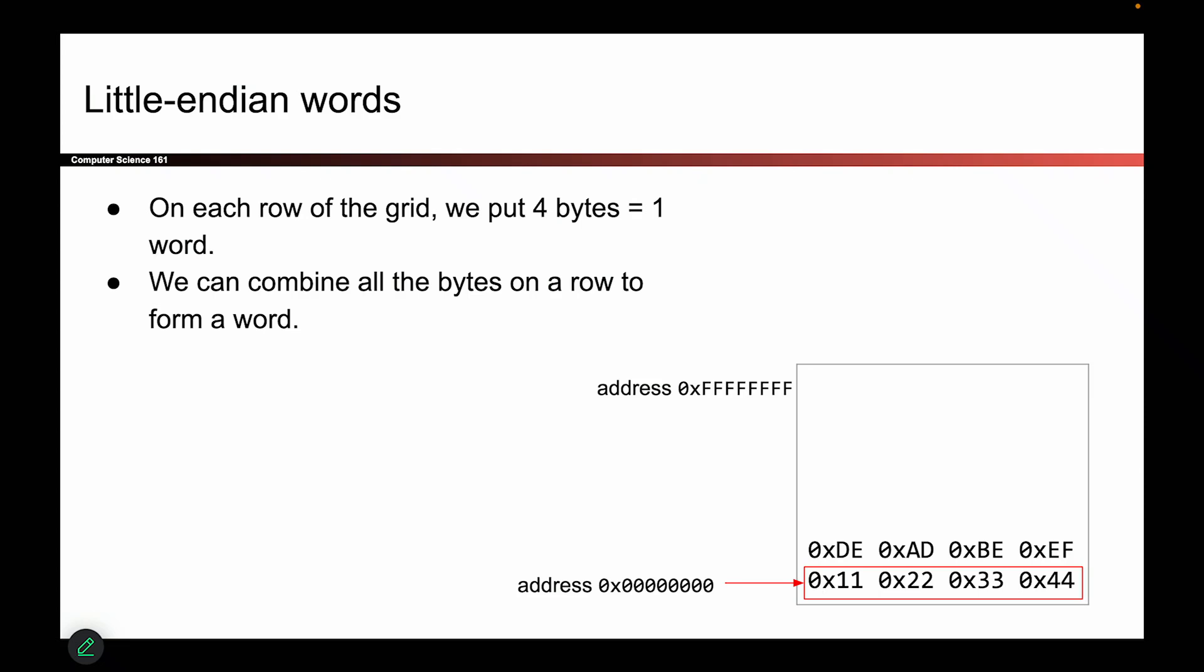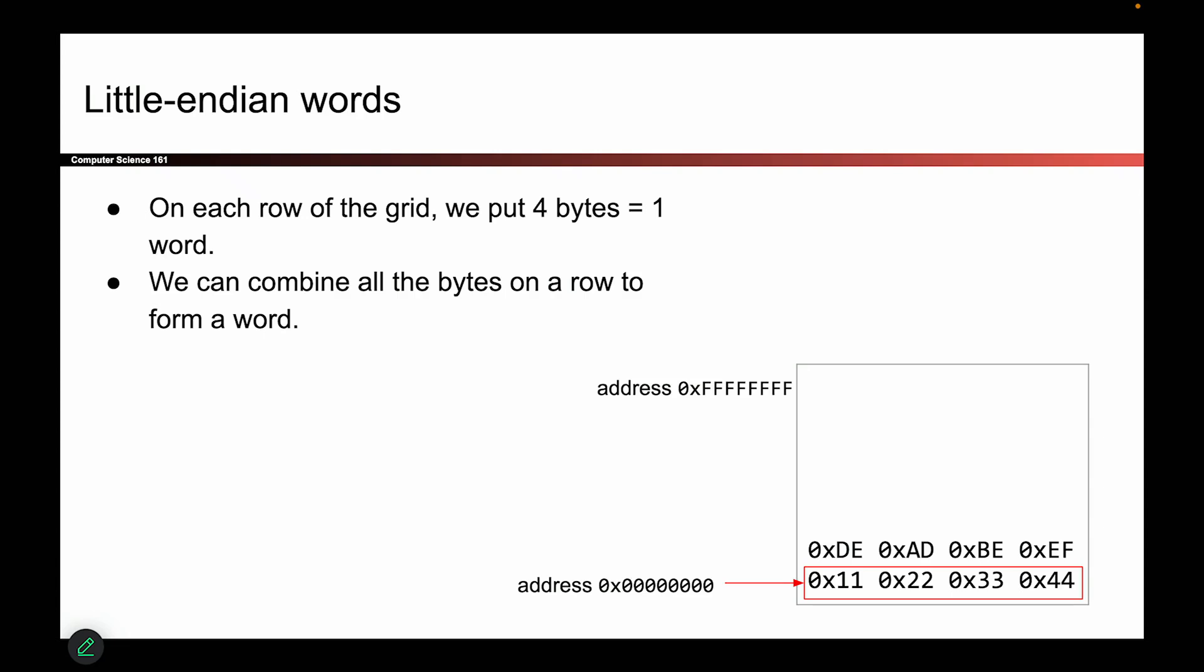And this introduces a question that we have to answer, which is, if I want to read these four bytes as a single unit of data, I don't want to read the bytes separately. I want to read them together, because I want to combine them and read them as something interesting, like an integer. How do I read these bytes as a unit of four bytes? Like, what order do I read these bytes in? So to answer this question, I'm going to take a little detour and give you an analogy.